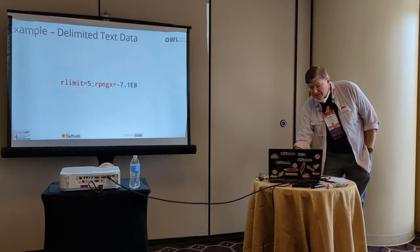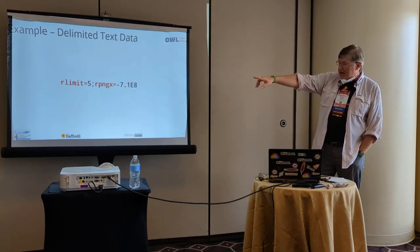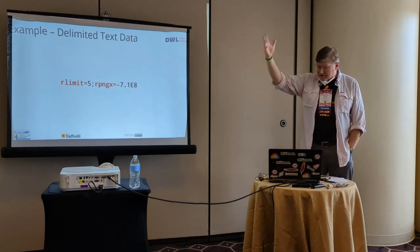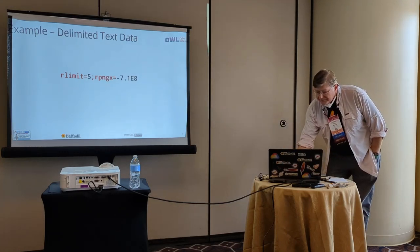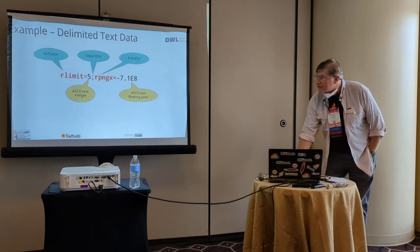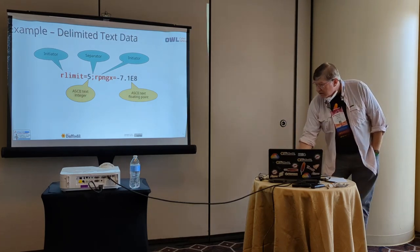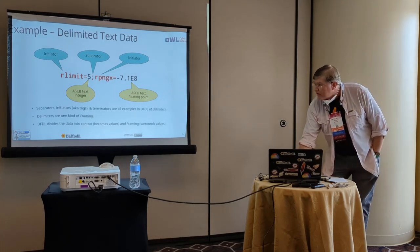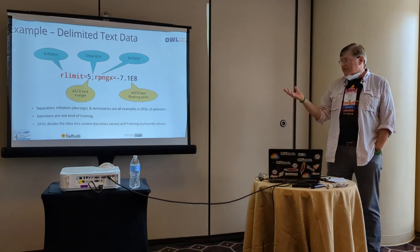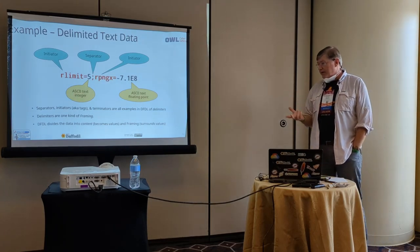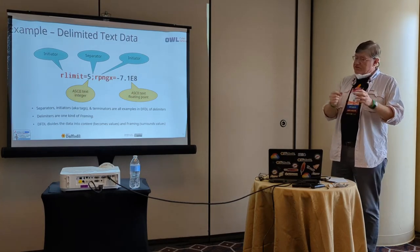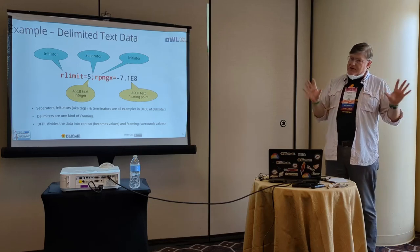I want to show you a snippet. Here's a little piece of data — it's got some tags and some values. 'R_limit equals five': the five is the data, the R_limit is some sort of tag. It's ASCII text integers and ASCII text floating point. It's got these syntax things: initiator, separator, another initiator for the other field. Separators, initiators — a.k.a. tags — and terminators are all examples of what DFDL calls delimiters. Delimiters are one kind of framing. DFDL divides the world into content, which is the stuff that turns into values, and framing, which is the stuff that surrounds the values.